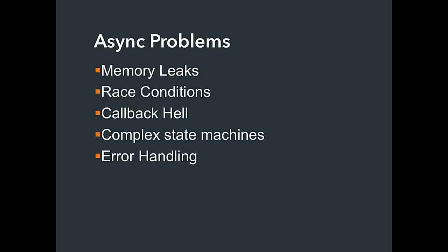With asynchronous code comes asynchronous problems: memory leaks — subscribed to an event and forgot to unsubscribe. Race conditions — two things going, waiting for both to complete, but sometimes the order switches from test to production. Callback hell. Complex state machines — when you've got concurrency going on, you introduce state variables to track it: is this task done? Is this task done? All that state can be really difficult to keep in the right state.